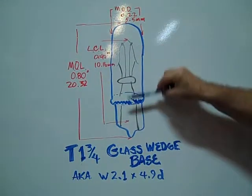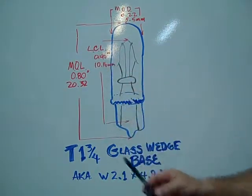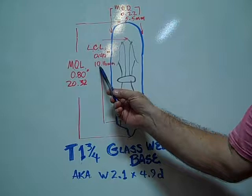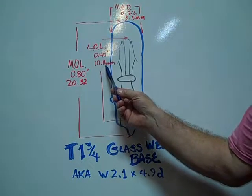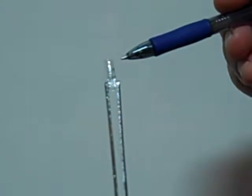The light center length is 0.40 inches, 10.16 millimeters. This is an example of a No. 74 sub-miniature glass wedge base bulb.